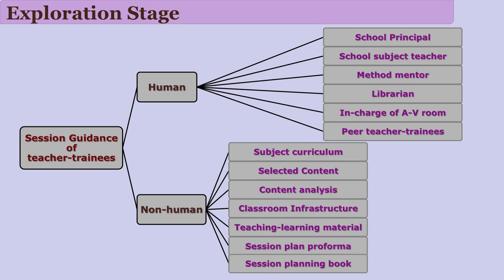There are many non-human components also. The classroom environment of that particular school is important, and simultaneously the AV room at the teacher training institute is important. The teaching-learning material to be used for session guidance is important. Teacher training institutes prepare proforma which are very important for students. The library is also an important factor. The system developer needs to explore and identify each and every human and non-human component that may affect the entire session guidance.